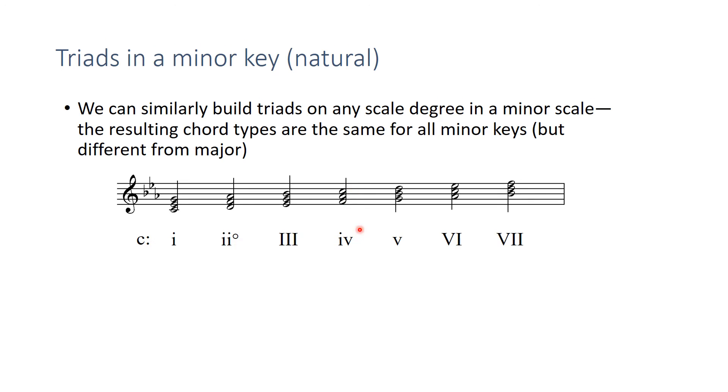F, A flat, C makes that minor. And since we're using natural minor, this time we have a G, B flat, D, which would be a minor five. A flat, C, E flat, major six. And again, we're not going to raise the leading tone here, so we have B flat, D, F making this major seven chord. So those are the types of chords that would occur naturally.